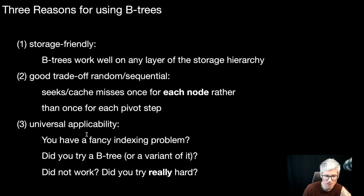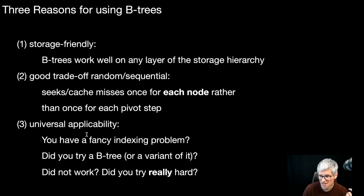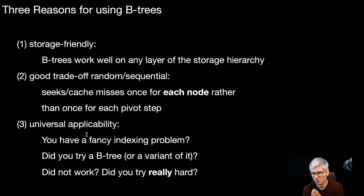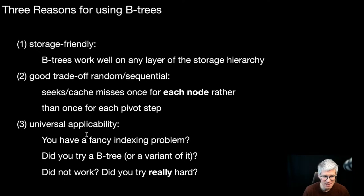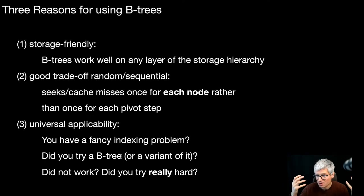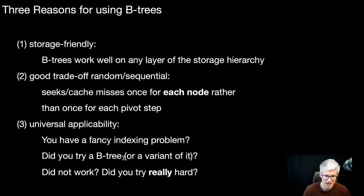The third point is universal applicability. Once you understand the B-tree and you have another indexing problem, you will in most cases be able to map it to a B-tree. It's rarely the case that you have to reinvent a completely new index structure. Either the original textbook B-tree would solve the problem, or any variant of it — and there are many variants of B-trees, and most of the time they will do the job.